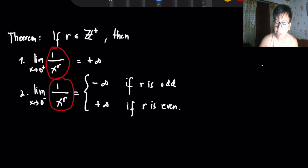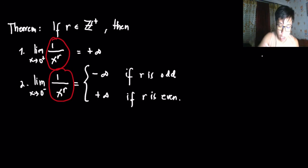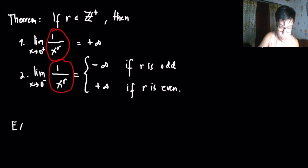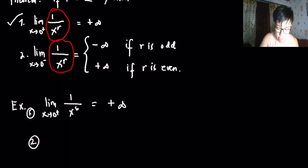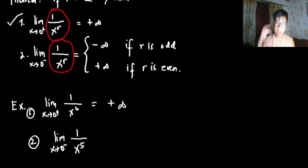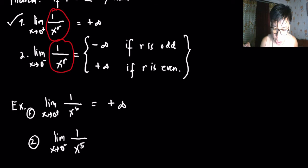The second part of the theorem says that the limit of 1 over x to the r as x approaches 0 from the left has two conditions: it is negative infinity if r is odd, and positive infinity if r is even. We can use this theorem when the function format looks like 1 over x to the r. If it doesn't look like that, then we cannot use this theorem. Let's consider an example: the limit of 1 over x to the 6 as x approaches 0 from the right. Since it's from the right, we use condition 1, so the answer is positive infinity.